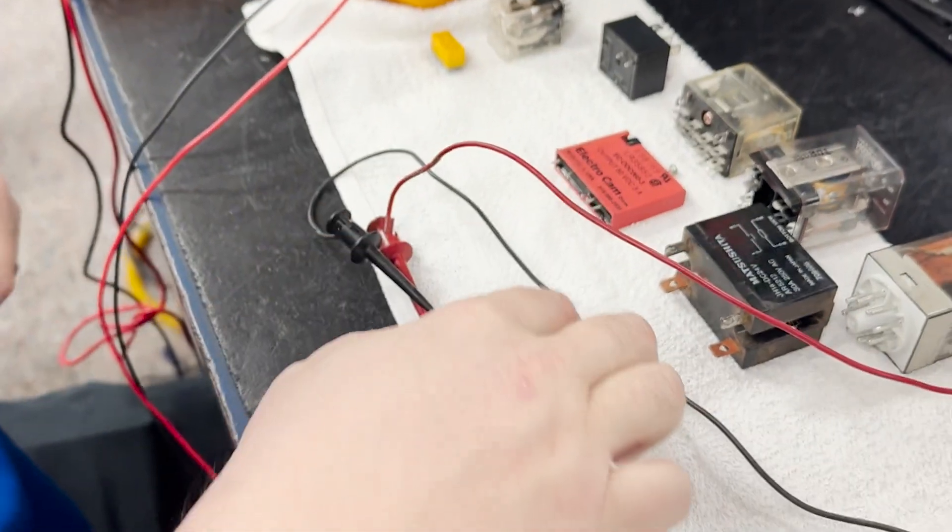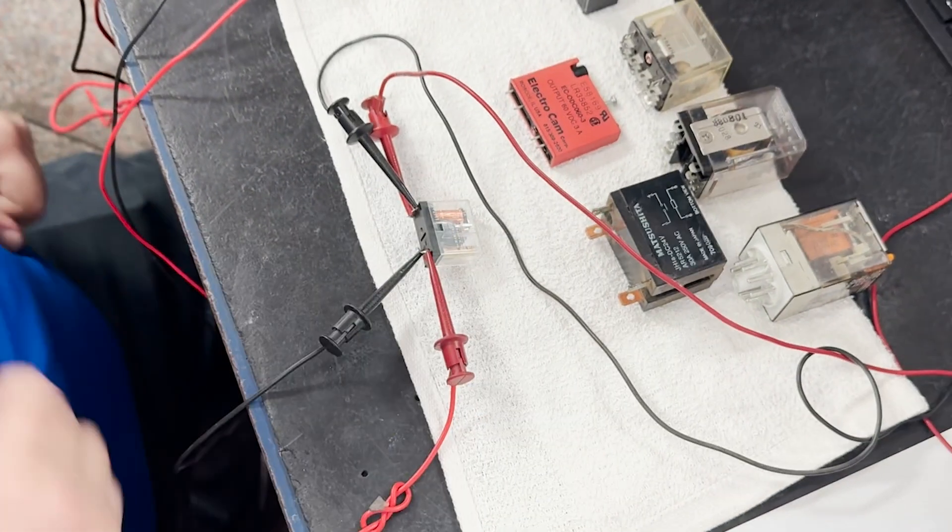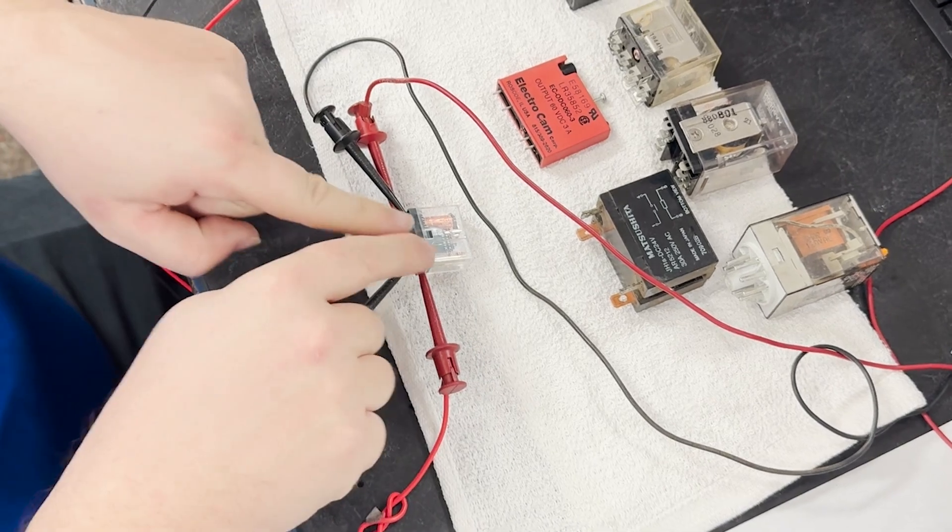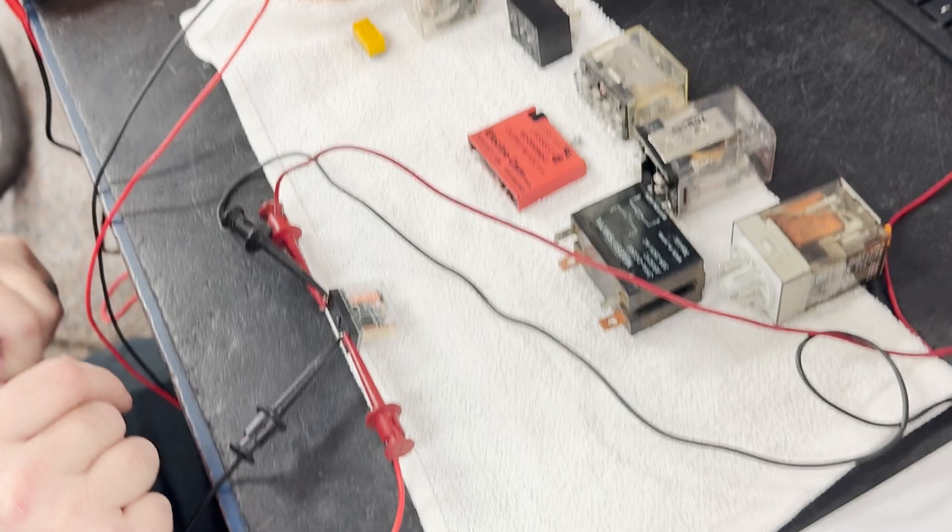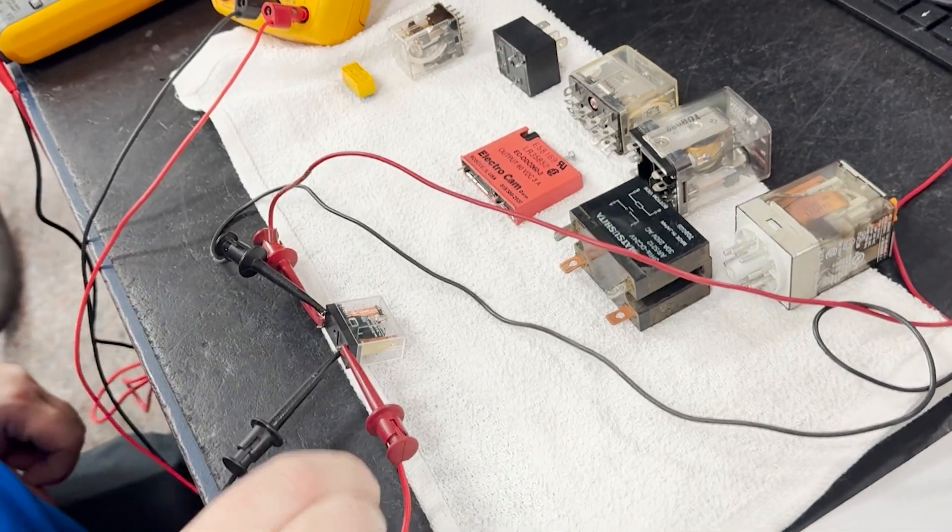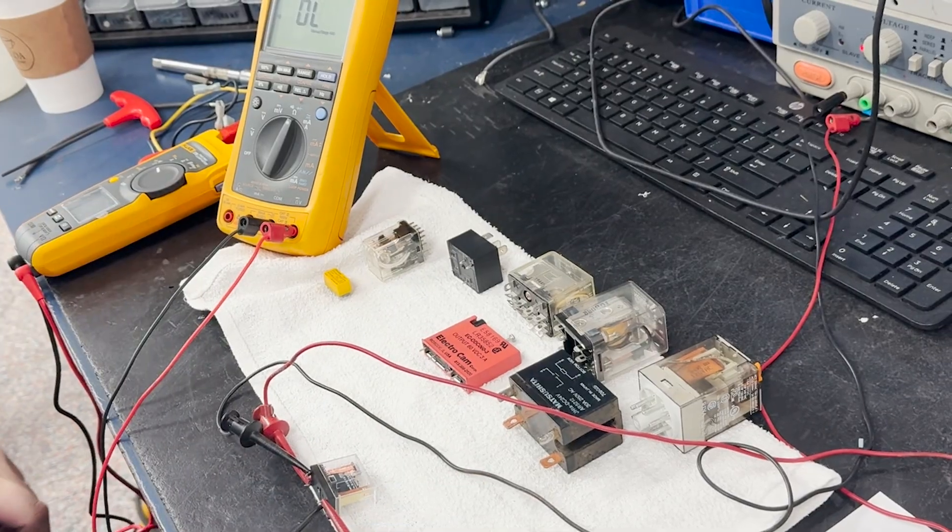Whenever you encounter a non-functioning relay, you should measure the coil. If the coil measures good, there's either a problem with the relay or it may be a polarized relay and you need to take that into consideration.